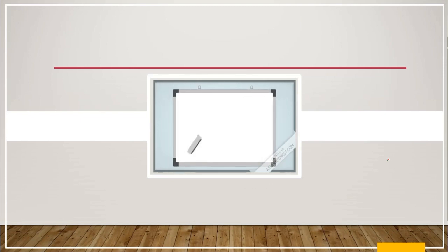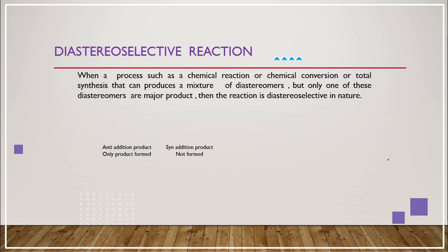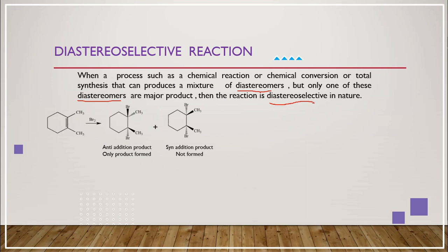Let us move on to our next topic, diastereoselective reaction. When a process such as a chemical reaction, chemical conversion, or total synthesis can produce a mixture of diastereomers, but only one of these diastereomers is a major product, then the reaction is diastereoselective in nature. In this example, when 1,2-dimethylcyclohexene is treated with bromine, we end up with the anti-addition product as the only product formed, whereas the syn-addition product is not formed.